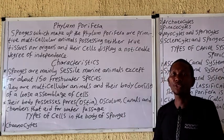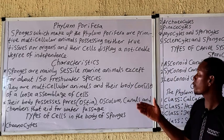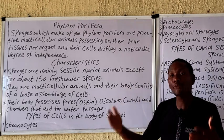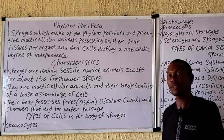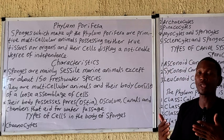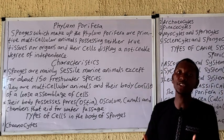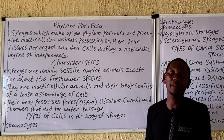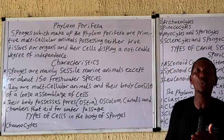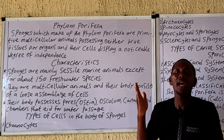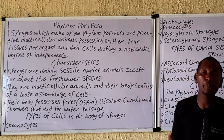What are the characteristics of this organism? The characteristics of the sponges include the fact that they are radially symmetrical, while in some cases they are asymmetrical. When we say they are radially symmetrical, it means they can be cut into two equal halves through any plane.